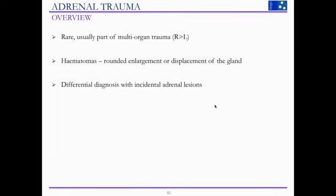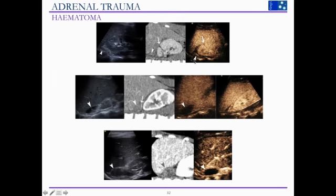Very briefly on adrenal trauma: these are very rare as isolated injuries and are normally part of multi-organ trauma. You can typically get hematomas presenting as rounded enlargement or displacement of the gland. CEUS is most useful here mainly as a differential diagnosis with incidental adrenal lesions — less relevant in children than in adults, but still useful. In examples shown, you can see partial enhancement of the adrenal gland with a non-enhancing component representing hematoma, and in another case the hematoma shows complete lack of enhancement following contrast.